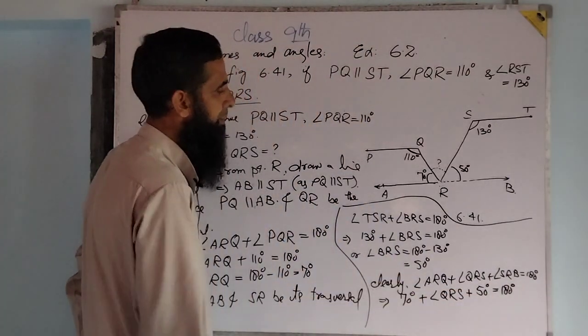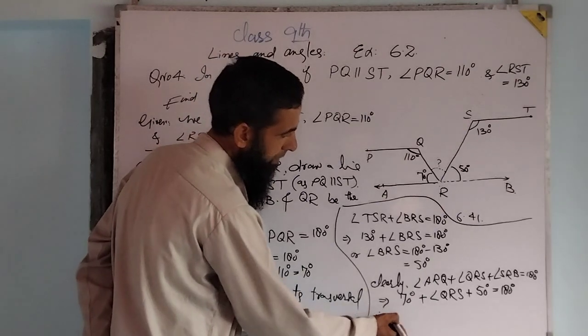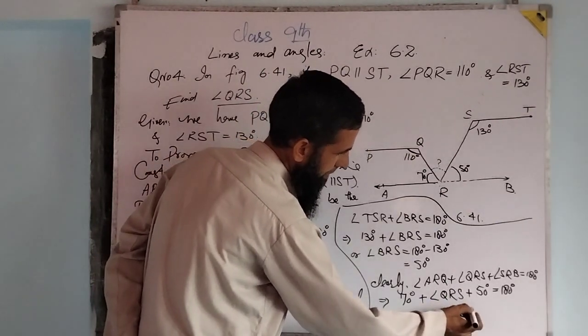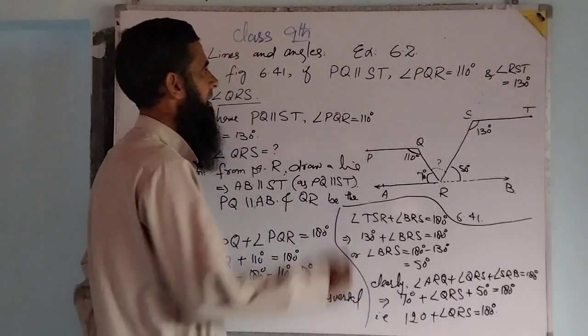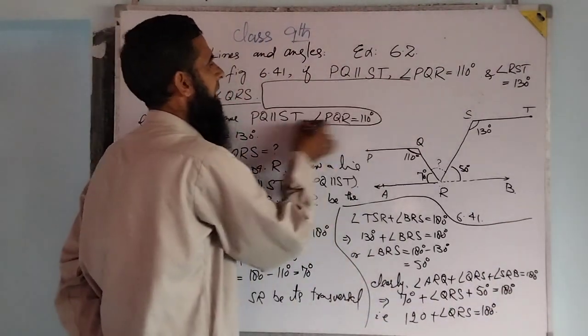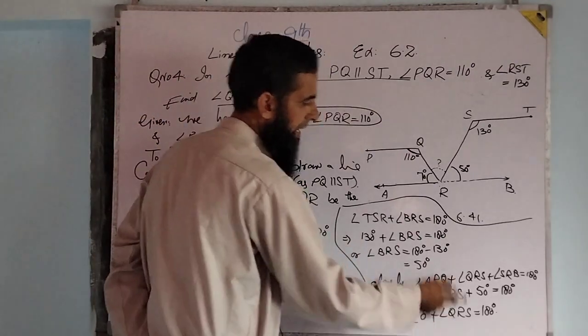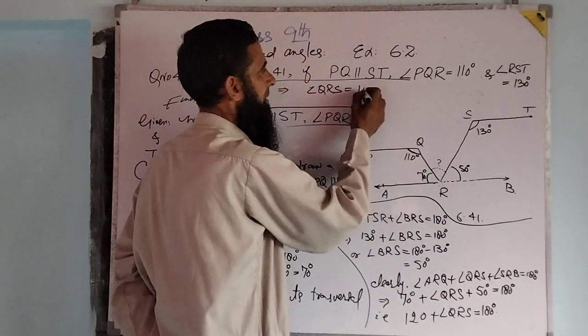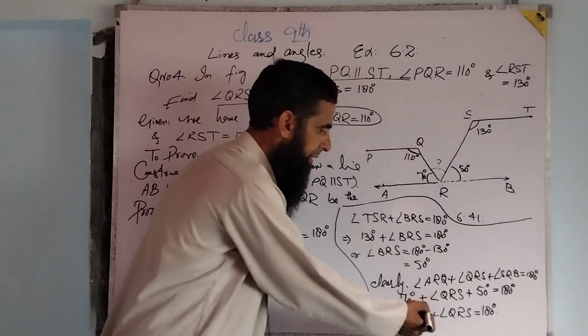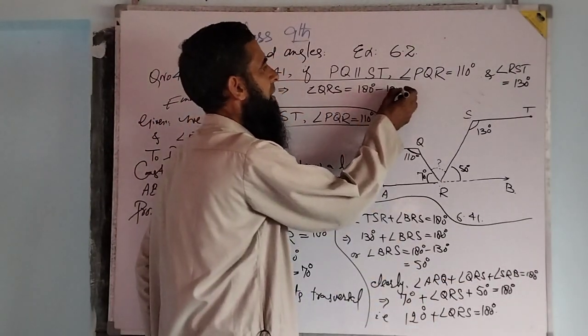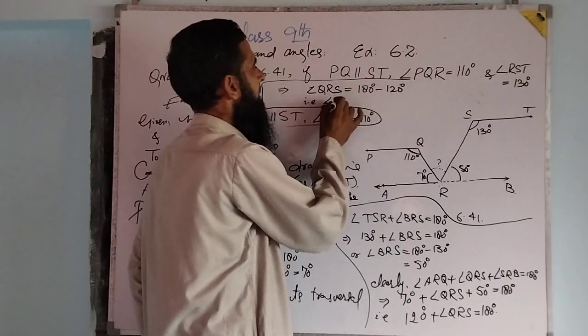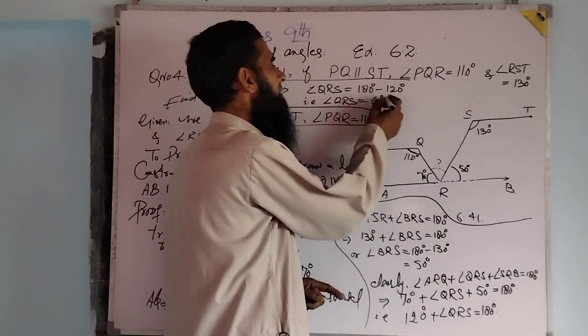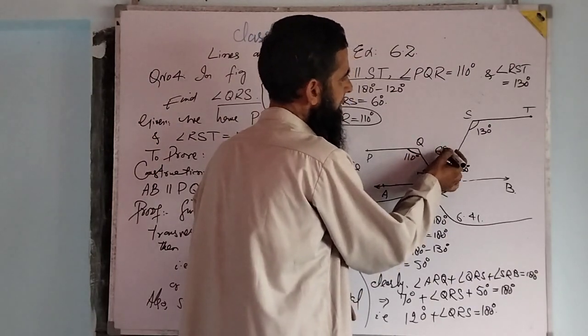Now 50 plus 70, that is 120, plus angle QRS equals 180. Now we find the value. This implies we have angle QRS equal to 180 minus 120. We get angle QRS equal to 60 degrees. That is, the required angle is 60 degrees.